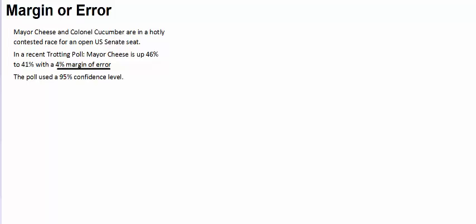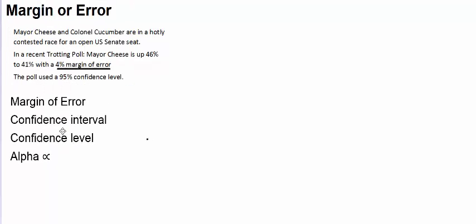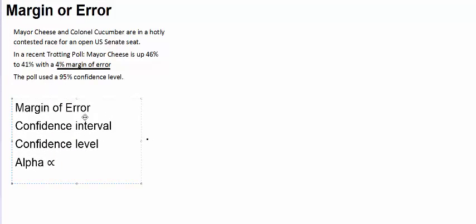So an obvious question here would be, is there a clear leader? Does Mayor Cheese or Colonel Cucumber have a clear lead in this election for an open U.S. Senate seat? So there's four terms I want to focus on as we discuss whether or not there's a clear leader. Those four terms are margin of error, confidence interval, confidence level, and alpha.